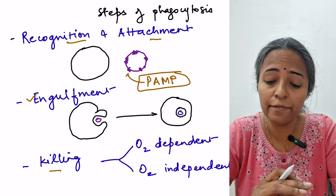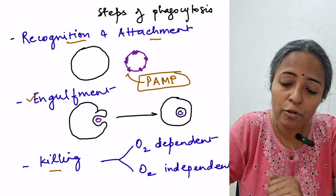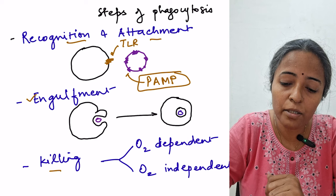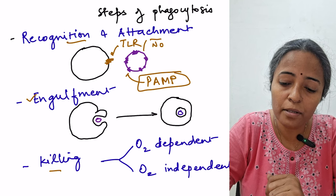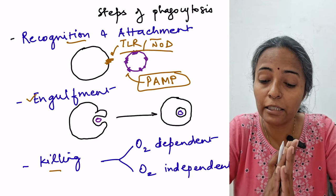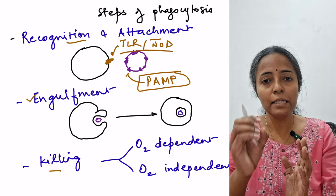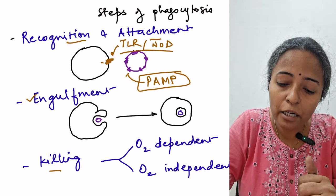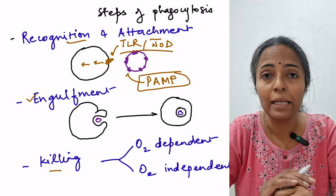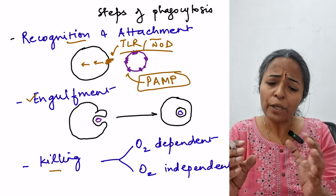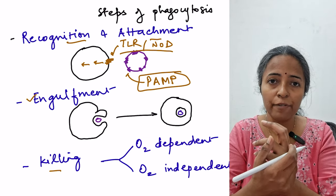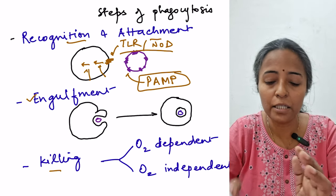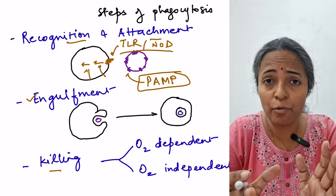PAMPs are identified by phagocytes by means of certain receptors present on them — these are toll-like receptors. Once the microorganisms bind with these toll-like receptors, certain downstream events take place. With the binding of the receptor, some modification occurs, causing changes in certain enzyme activity, similar to hormone mechanisms of action.